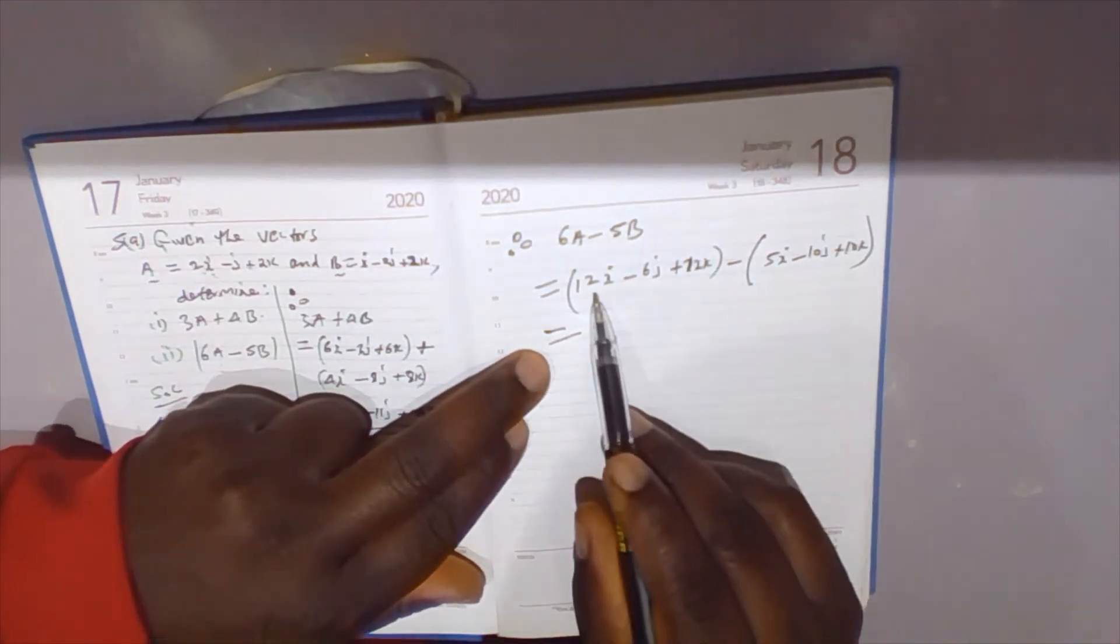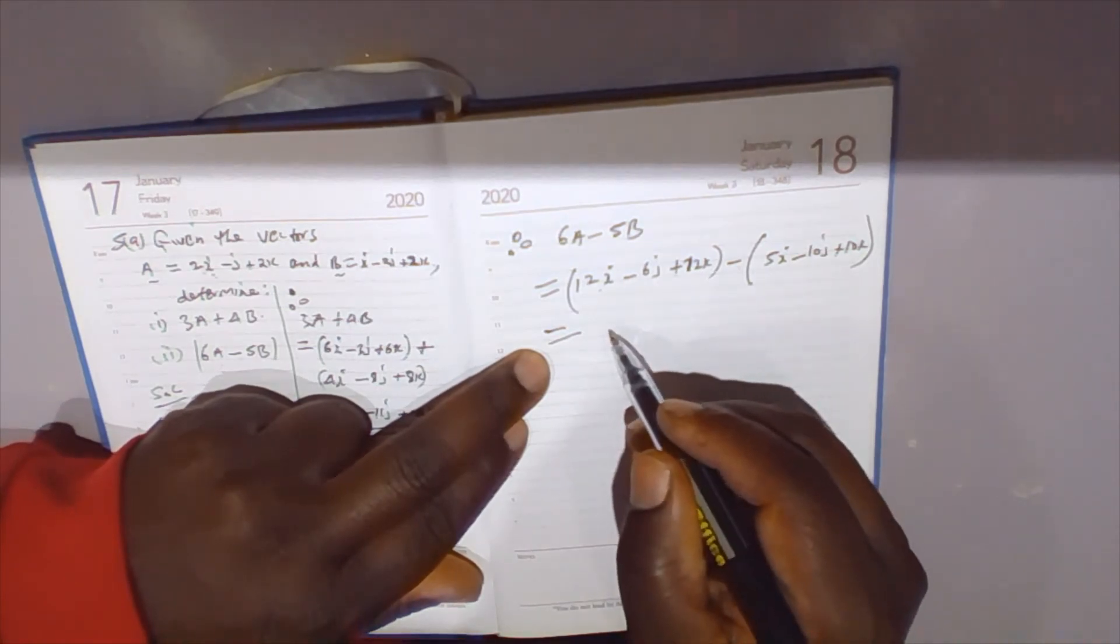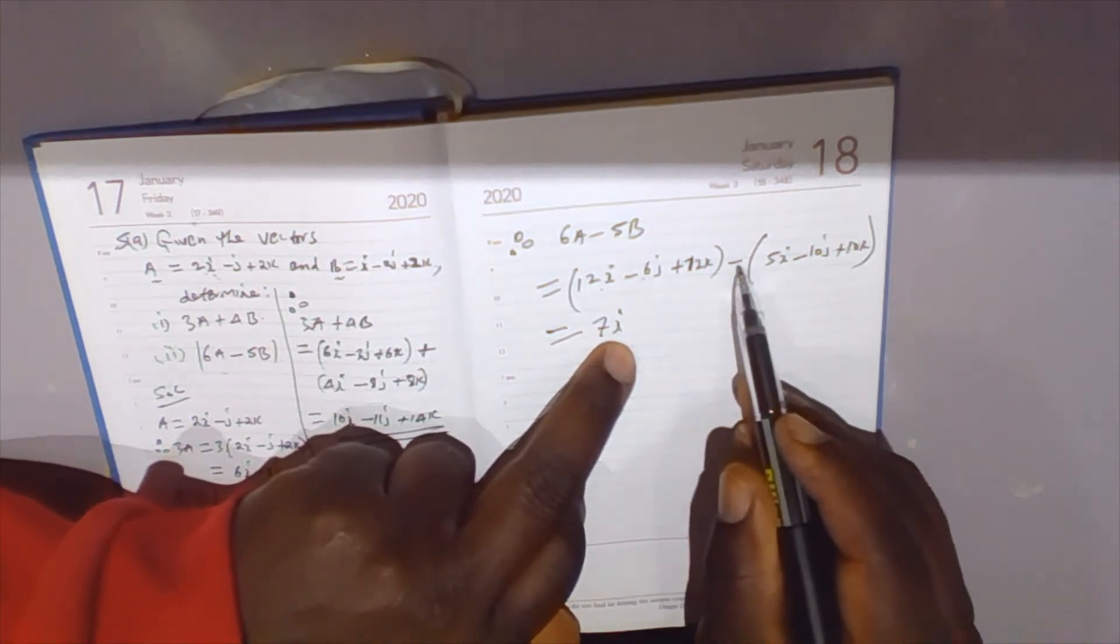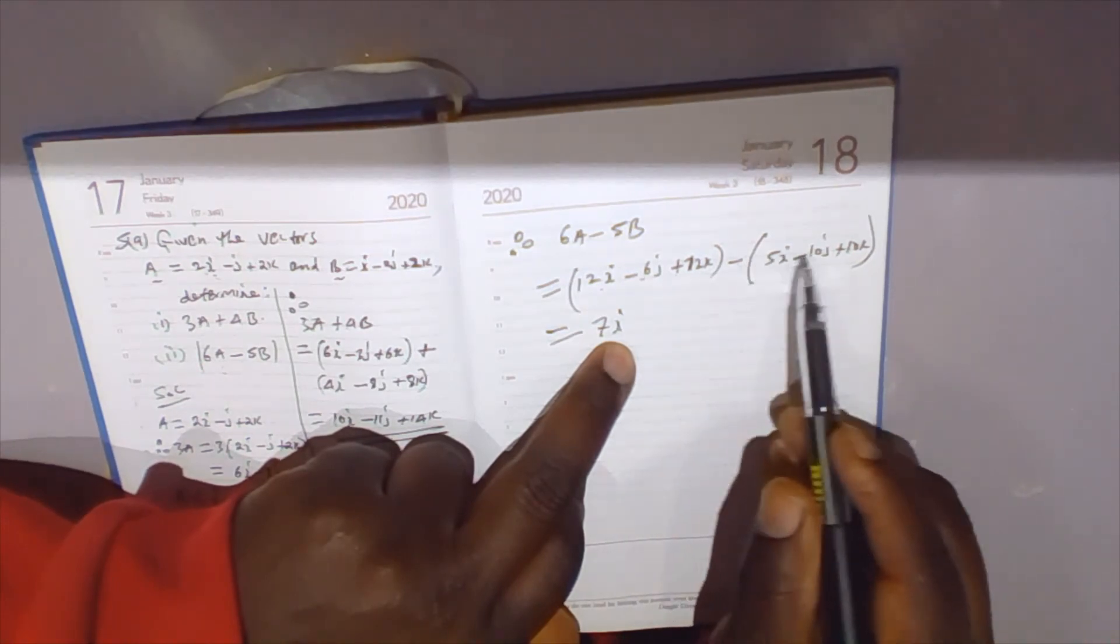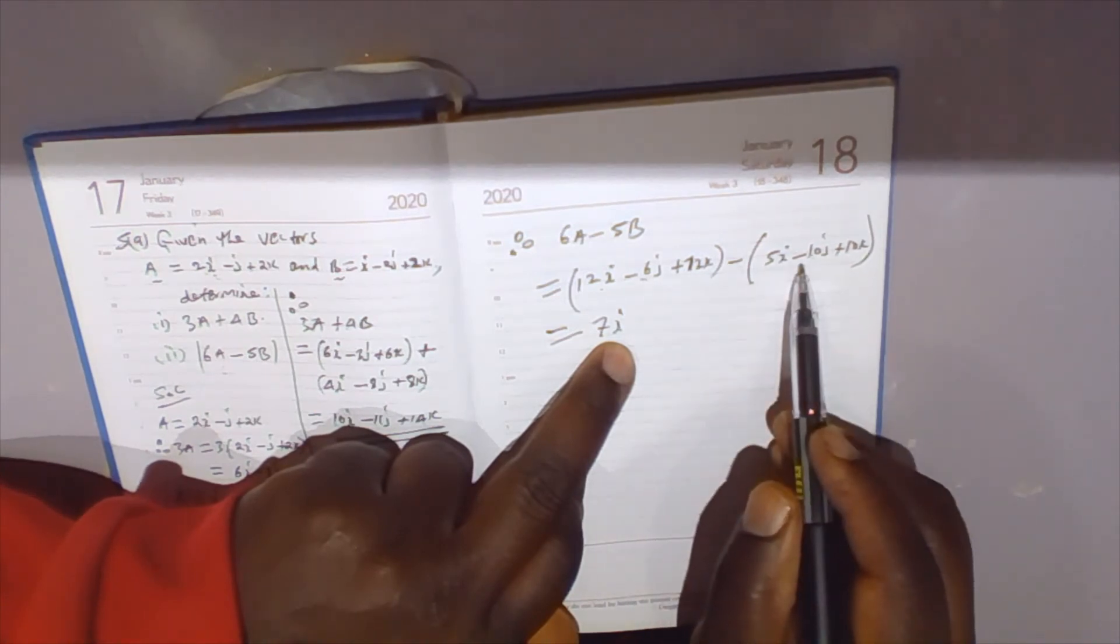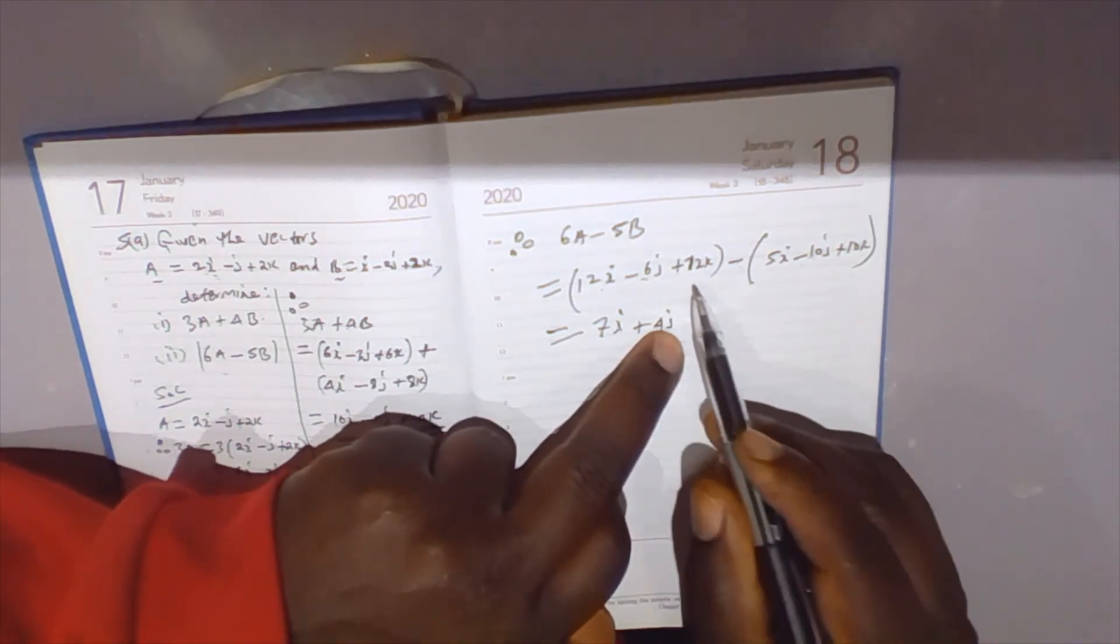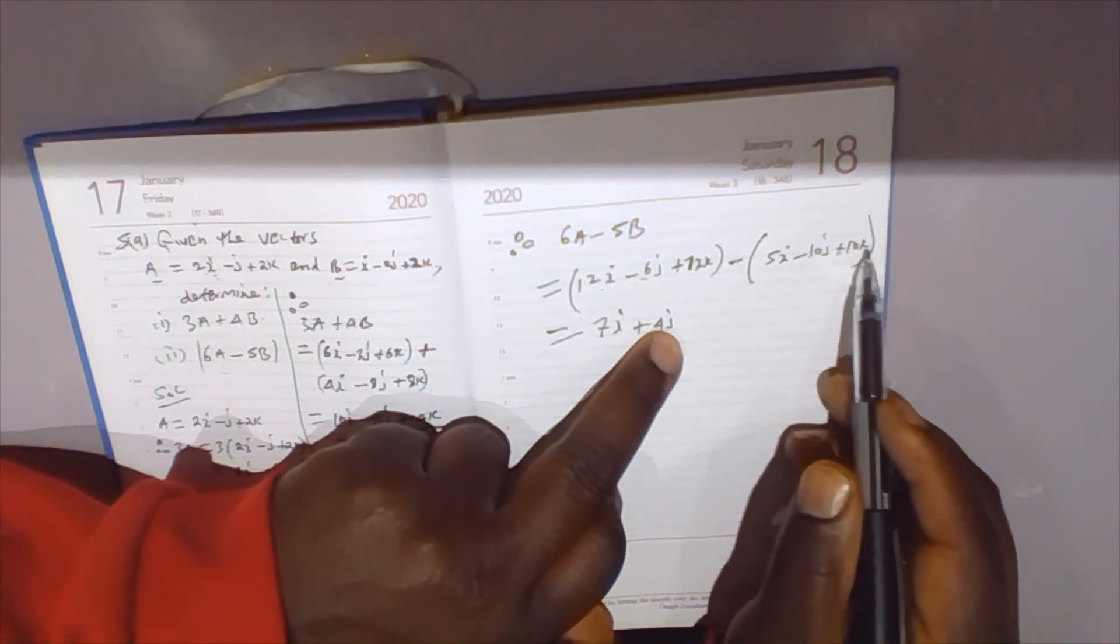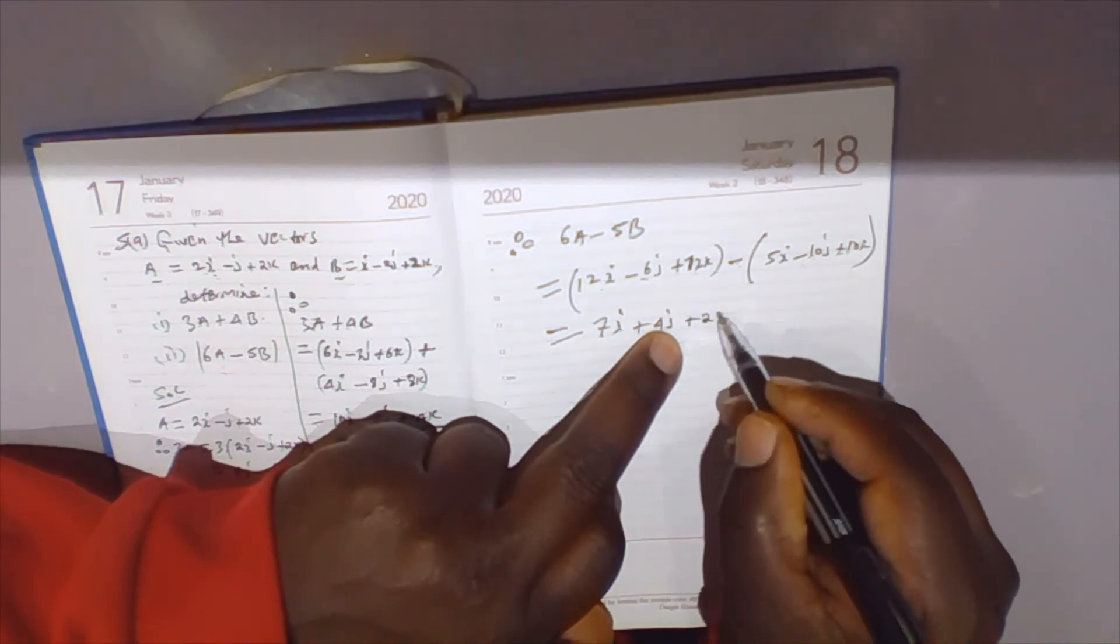This equals 12 minus 5, which is 7i. Then minus 6 minus negative 10 is the same as minus 6 plus 10, giving us plus 4j. Finally, positive 12 minus 10 gives plus 2k. So 6a - 5b equals 7i + 4j + 2k.